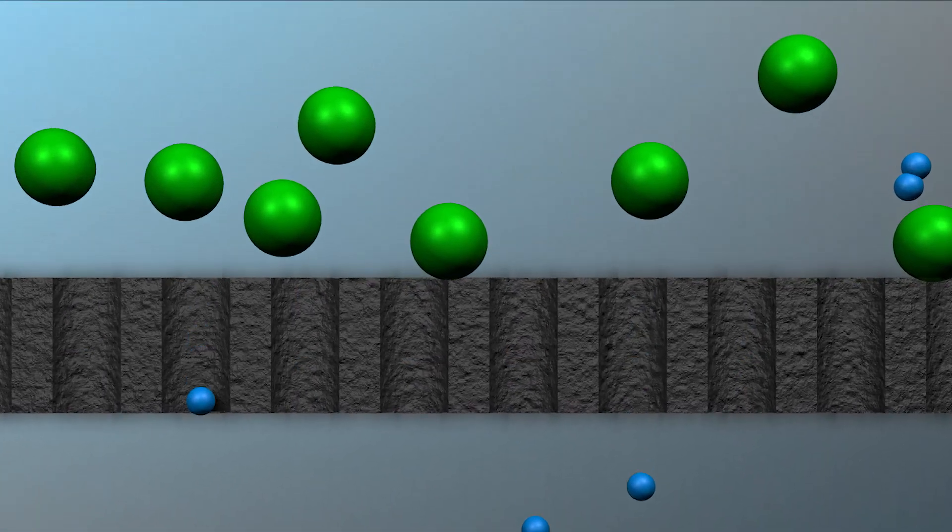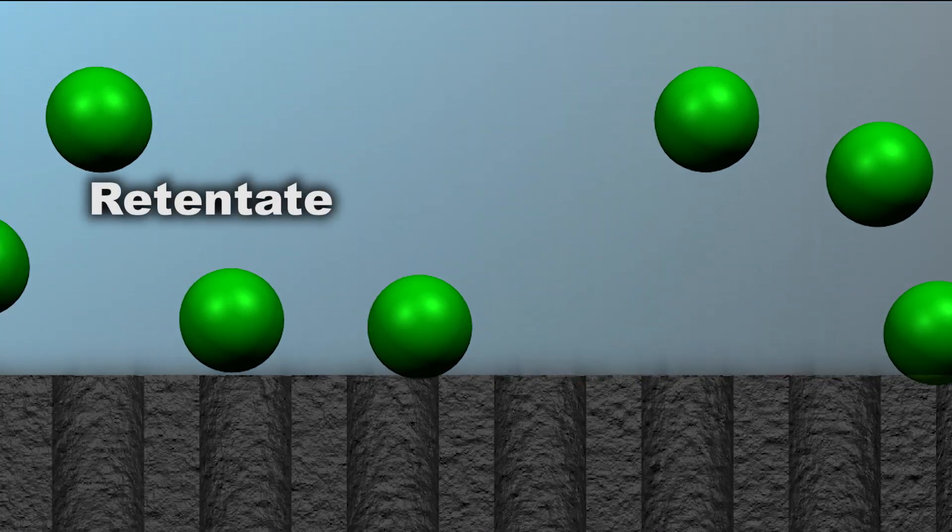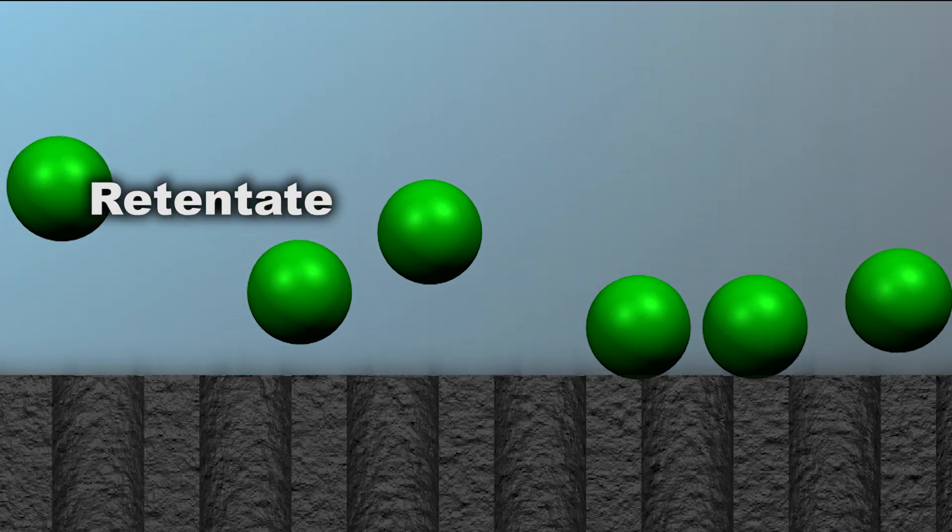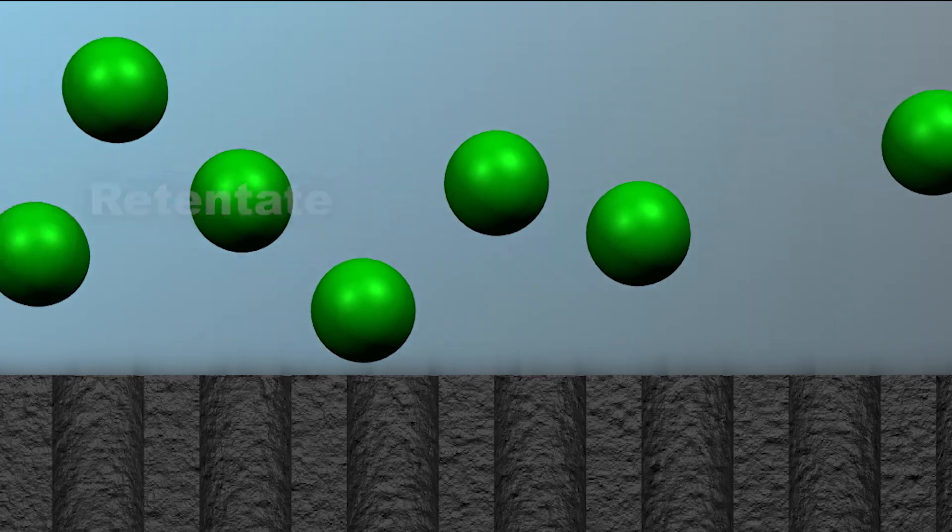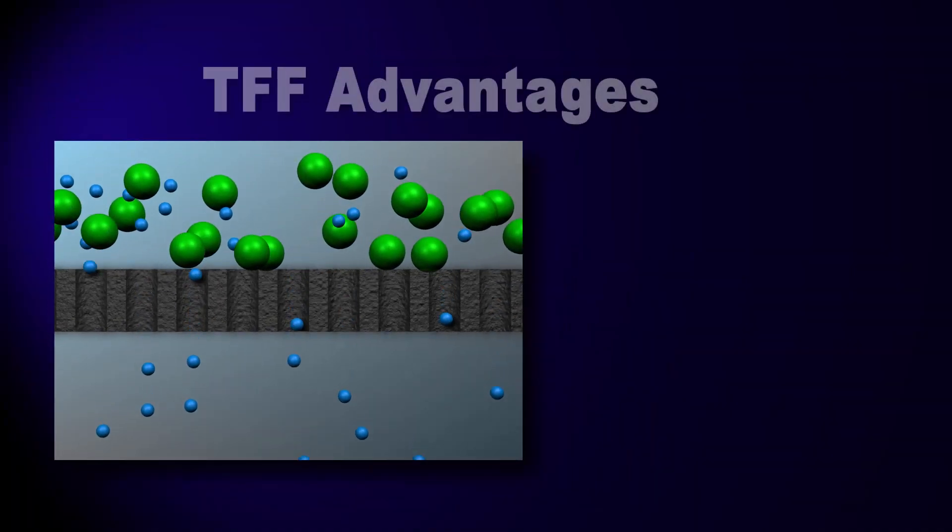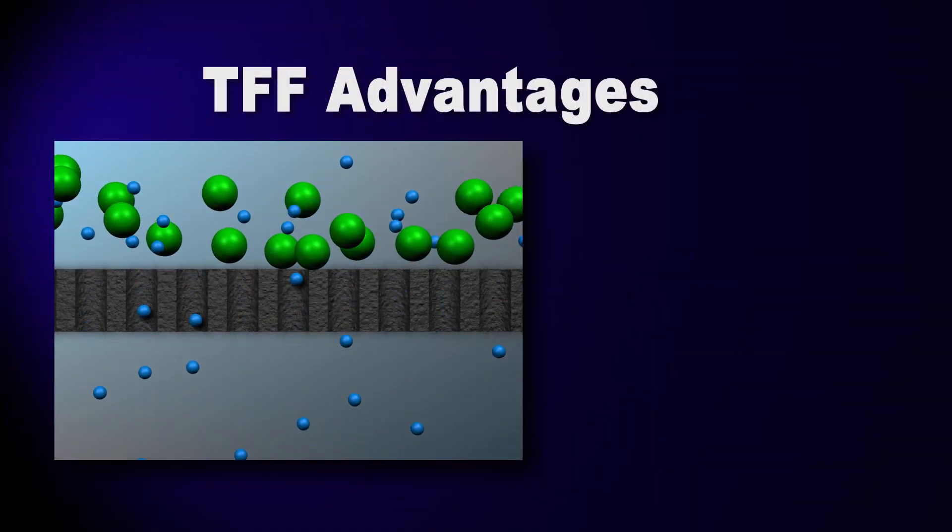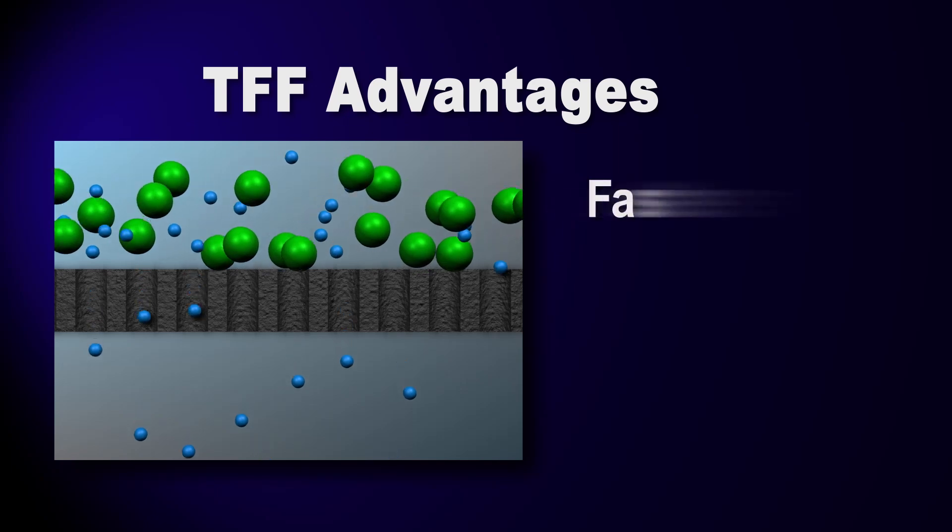The portion of the feed stream that does not permeate the membrane is called the retentate. It contains the retained product and is the stream we are most interested in. What makes TFF different is a core technology that enables it to be faster, more efficient, more flexible, and even self-cleaning.